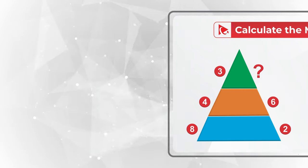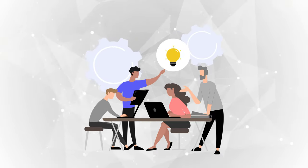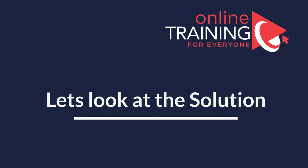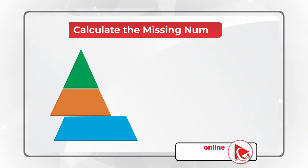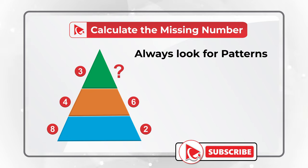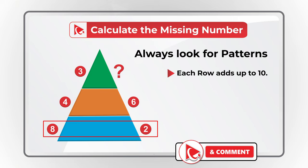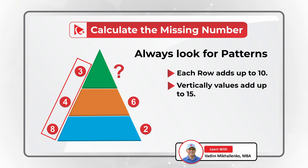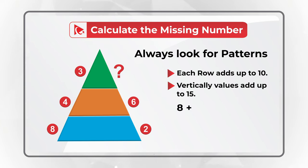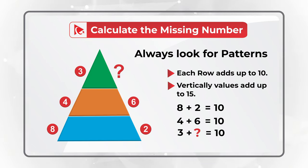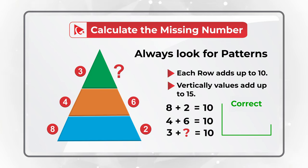Do you see the answer? Here's a quick hint: you need not to guess the number but calculate it. You need to always look for patterns, and there are two patterns here. The first pattern is that each row adds up to 10, and vertically values add up to 15. So 8 plus 2 equals 10, 4 plus 6 equals 10, and 3 plus the missing number also equals 10. So the correct answer is choice C, 7.